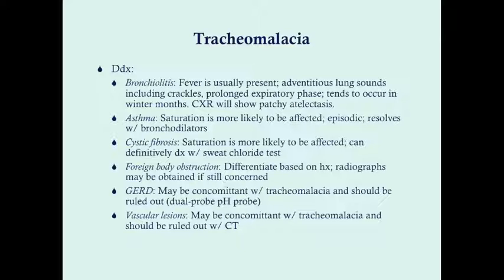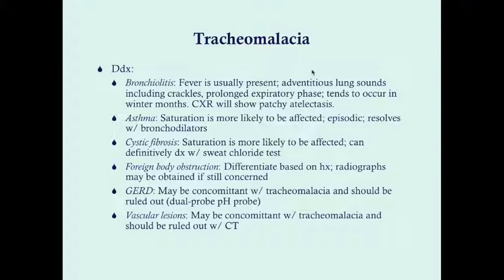Foreign body obstruction has a very unique history — sudden stridor — differentiable by history, and radiographs can be obtained if needed. Gastroesophageal reflux disease may be concomitant with tracheomalacia or its cause; rule it out with dual probe pH testing. Vascular lesions can also be concomitant with or causative of tracheomalacia and should be ruled out with CT.